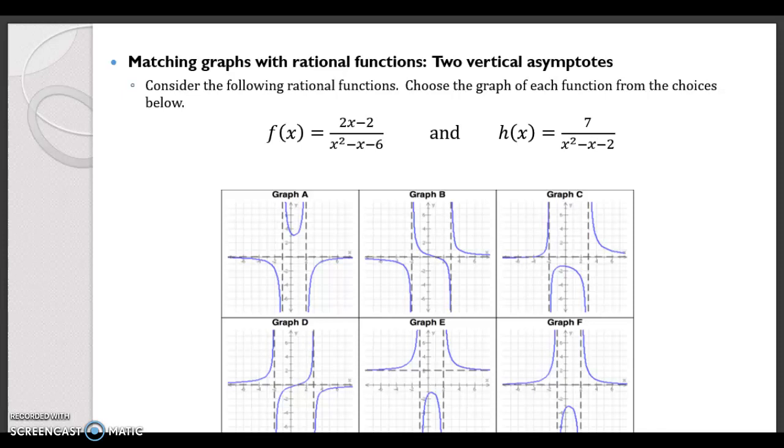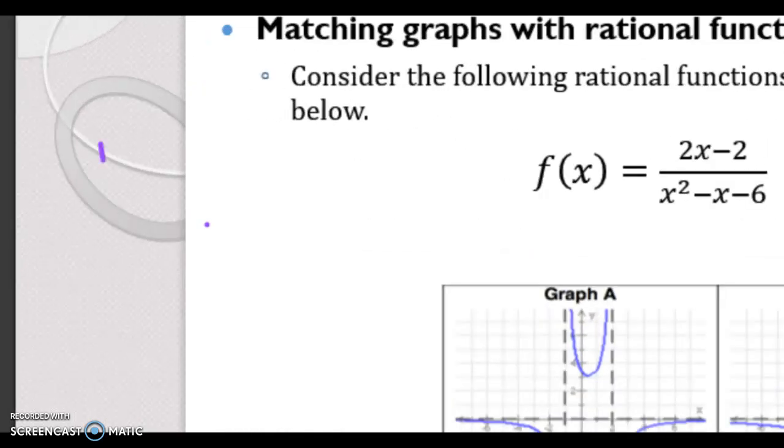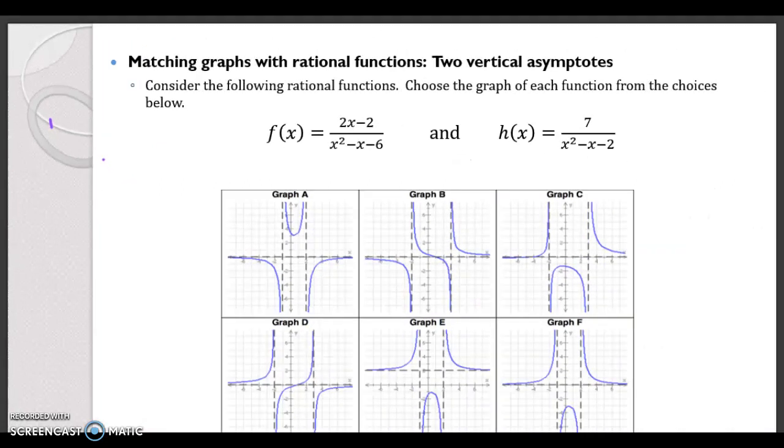All right, so for f of x, let's look at f of x first. The denominator x squared minus x minus 6 cannot equal 0.